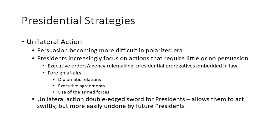The strategies of bargaining and going public are based on the idea that the president needs the buy-in of others in the system to get things done. This is certainly true for passing new laws or ratifying treaties. But one thing that has happened in the past couple decades is that presidential persuasion has become a more difficult task as the parties in Congress and in the general public have become more polarized. Presidents Clinton, Bush, Obama, and Trump have increasingly found that there are few people on the other side of the aisle who can be persuaded to go along with the president of the other party. This has particularly manifested itself in legislative gridlock, where Congress passes many fewer laws than it did throughout most of the 20th century. When presidents find their legislative agendas stall, they have become increasingly likely to adopt a strategy of unilateral action.